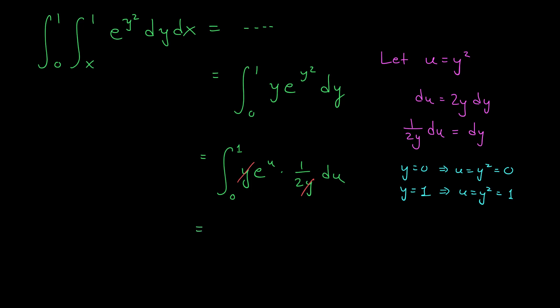So we have 1 half times the integral from 0 to 1 of e to the u du. Wow, this isn't so hard. An antiderivative of e to the u with respect to u is e to the u. This gives us 1 half times e to the u evaluated from 0 to 1, which is 1 half e to the 1 minus e to the 0, or in other words, 1 half times e minus 1.